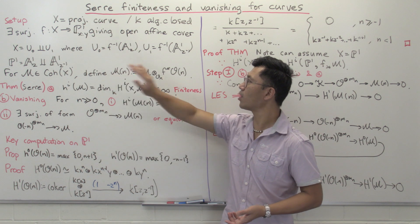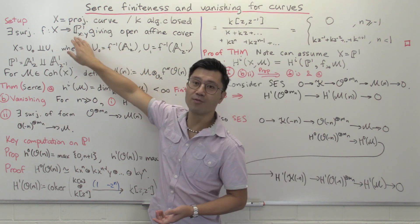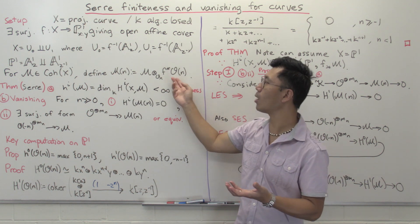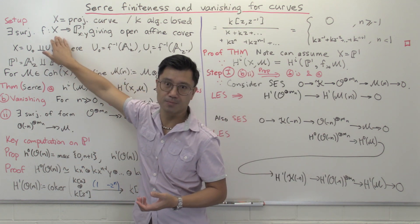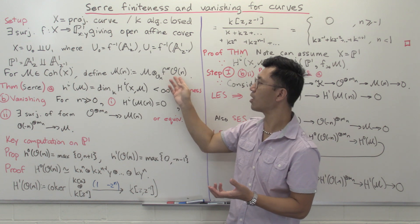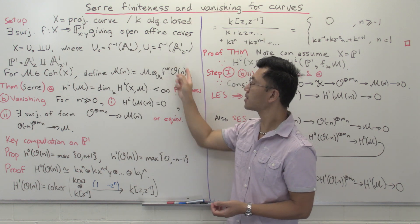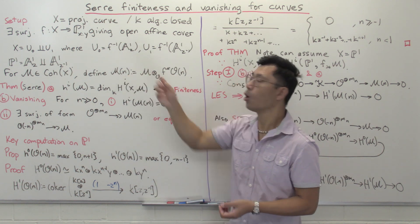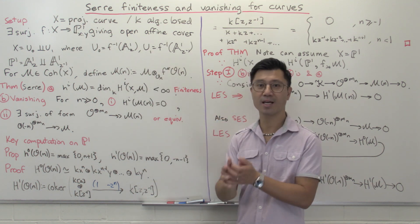So M twisted by n is going to be a coherent sheaf on X. First we look at O(n), which is a coherent sheaf — in fact an invertible sheaf — on P1. It's an invertible sheaf, so it corresponds to a line bundle. We can pull that line bundle and invertible sheaf back up by this f onto X. Now we have something that's a line bundle on X, and we can take the tensor product with the coherent sheaf M to get a new coherent sheaf. Locally, this M twisted by n will look like M.